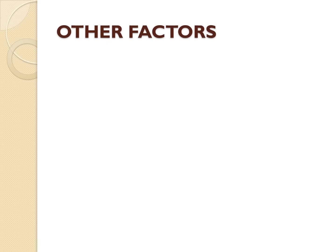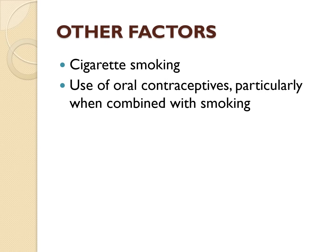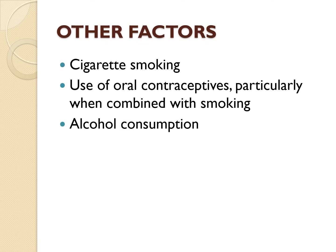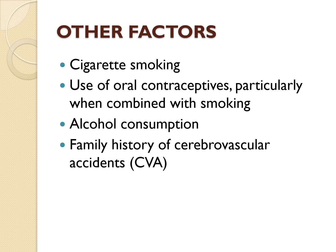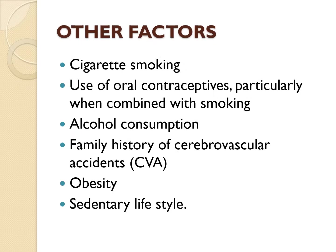So we have discussed the non-modifiable factors and the modifiable factors. Let's look at the other factors. Other factors include cigarette smoking, oral contraceptive use especially if that person is also a smoker, alcohol intake, family history of stroke, obesity, and a sedentary lifestyle. These are the other factors that can contribute to stroke.